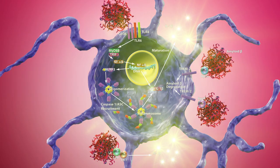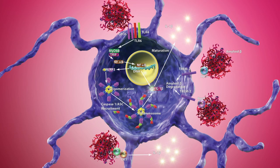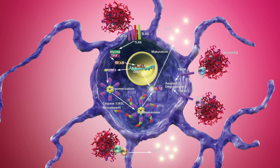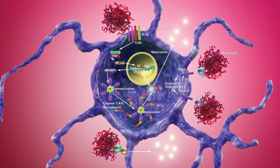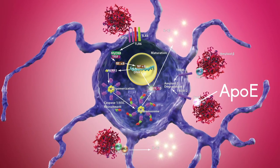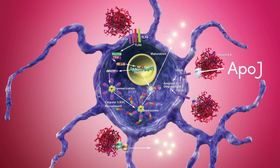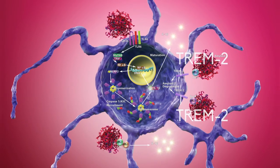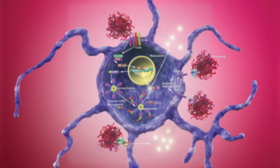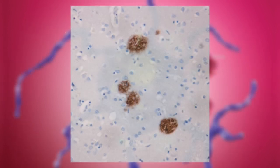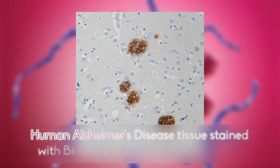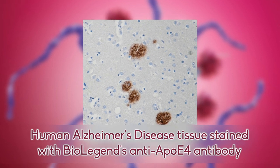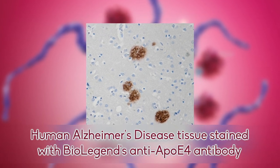Amyloid beta triggers IL-1 beta production through interaction with CD36. Amyloid beta uptake and degradation is triggered when it binds to apolipoproteins ApoE and ApoJ, forming complexes that are recognized by TREM2 expressed on the surface of microglia. Genetic mutations in TREM2 are a risk factor in developing Alzheimer's disease because these variants have reduced ability to bind amyloid beta apolipoprotein complexes.